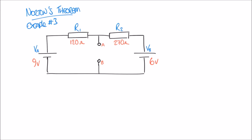We're going to tackle this problem using the same three steps as previously, but we're going to use the superposition principle to help us solve it. The superposition principle allows us to deal with this circuit by considering one power supply at a time. First we'll consider VA on the left-hand side and ignore VB, then do the opposite, and finally add our results together to get the total Norton current.